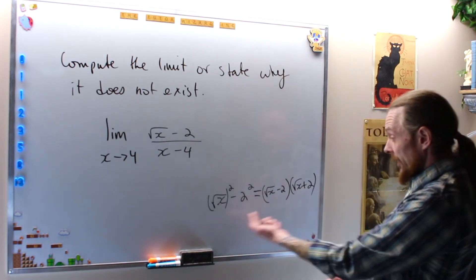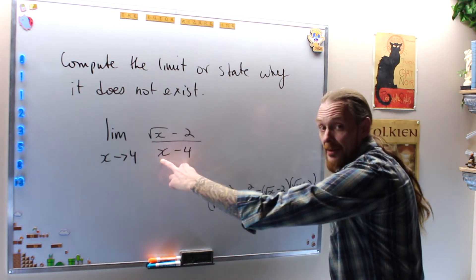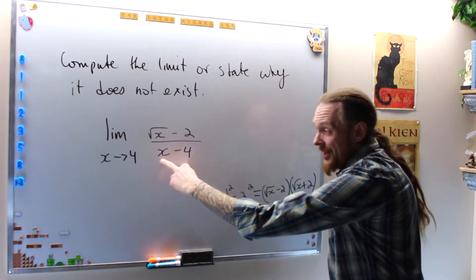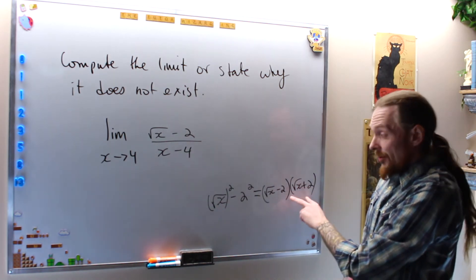So now with that clever identity that I can see here, they're trying to train you to see these things not just as what it is, x minus 4, it's actually root x minus 2, root x plus 2.